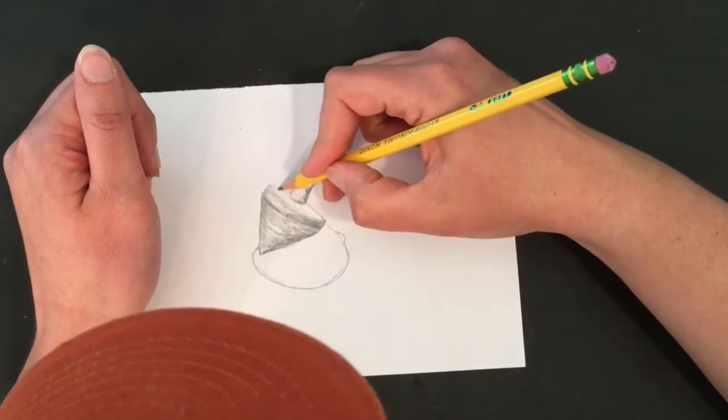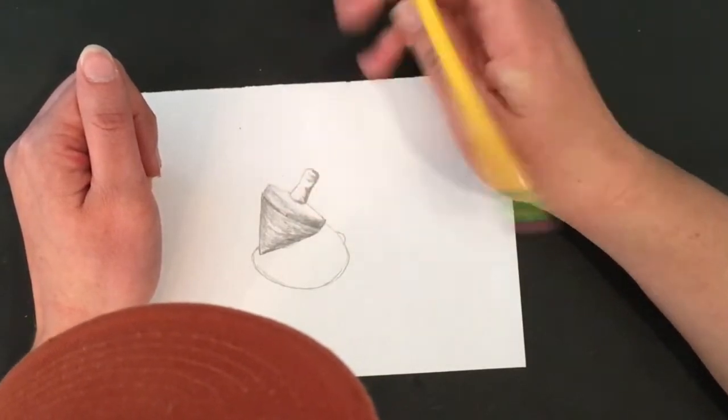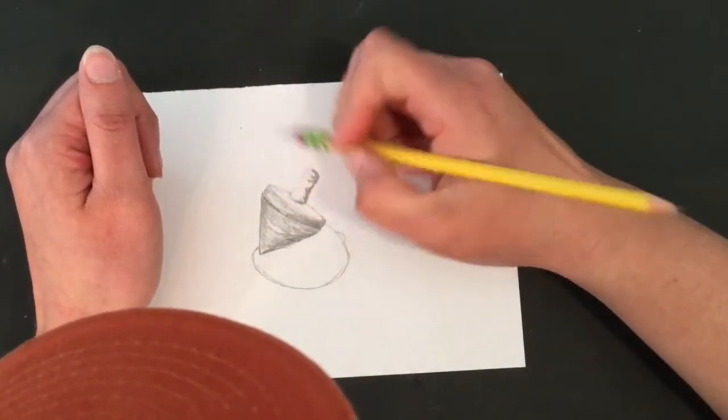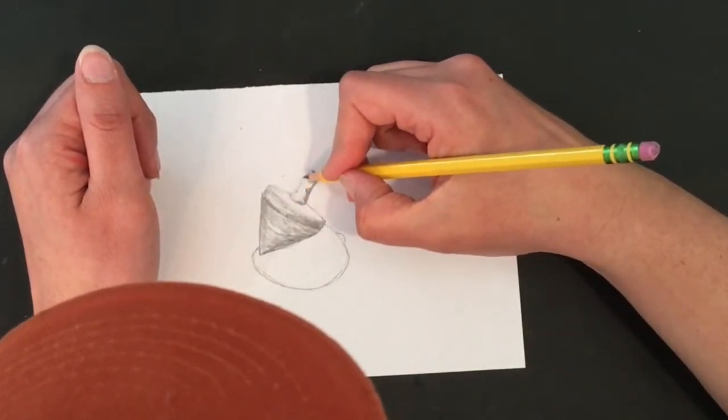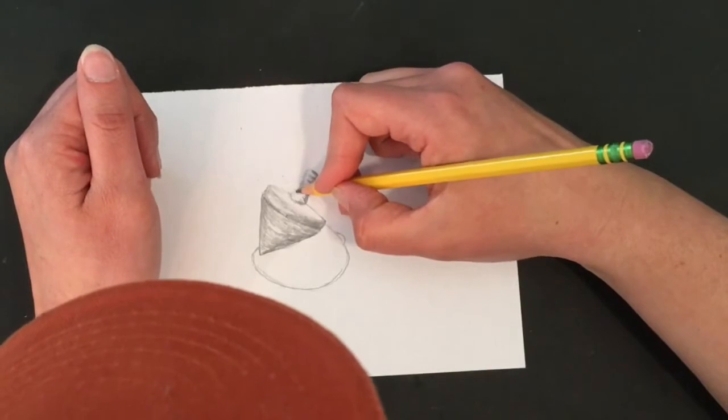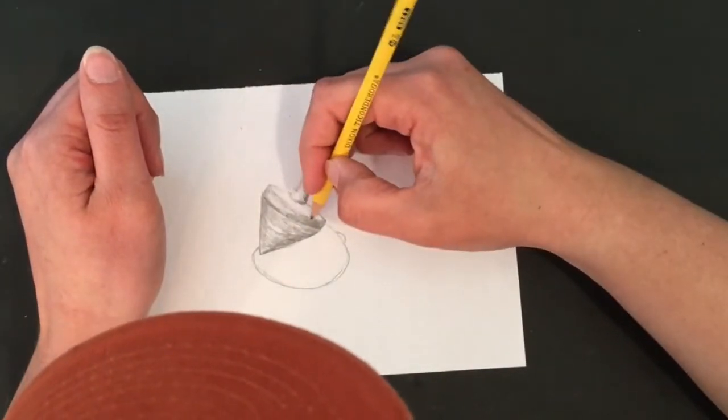Now this top section of it is really light, so I'm going to leave that really light and just put the tiniest bit of shading just at the edge and sides. This is all really light up here, so I'm using my finest, lightest pencil pressure. That looks pretty good.